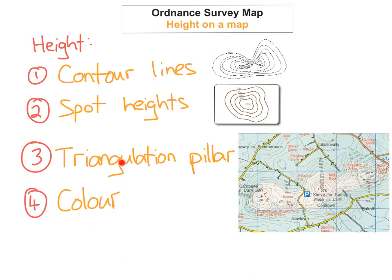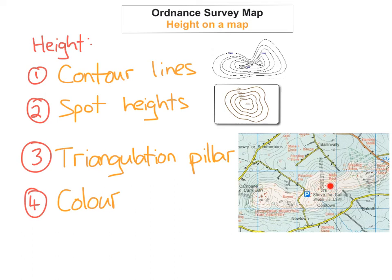The fourth way to show height is colour. Green is usually used to represent lowlands — for example, land up to 200 meters is shown in green. Anything above 200 meters starts to change to brown, and the higher the land, the darker the brown becomes. As you can see here, most of this area is below 200 meters because it's green, but this area here must be above 200 meters because it's turned a brown colour. The values here are 254, 287, and 276. If the land were 500 or 600 meters above ground, we'd see a much darker brown.